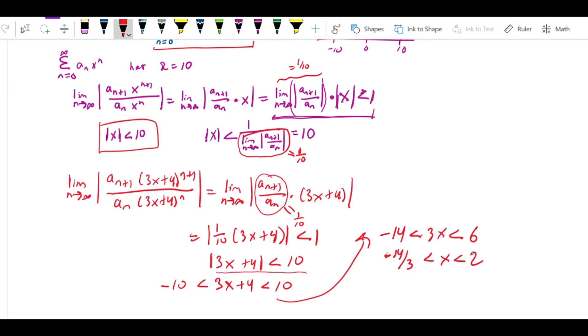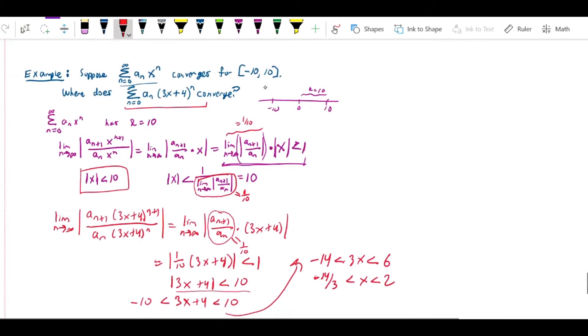Since I also know that the end points were included, I can preserve that. And the answer is going to be negative 14 thirds comma 2.